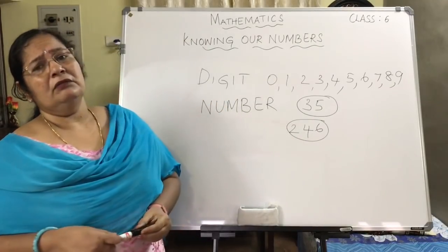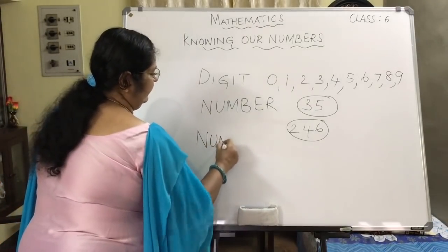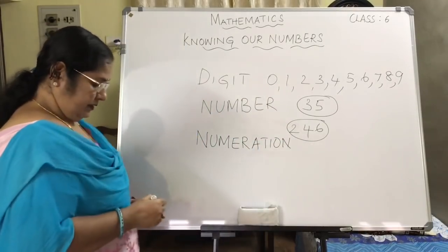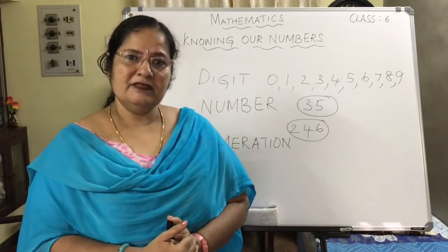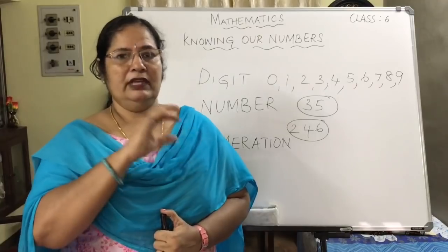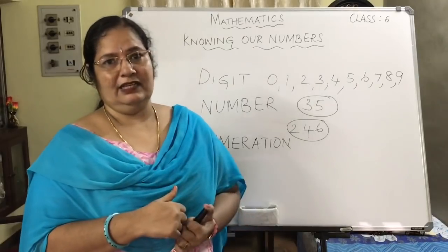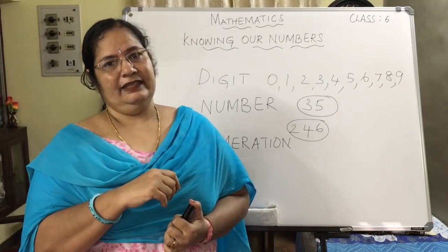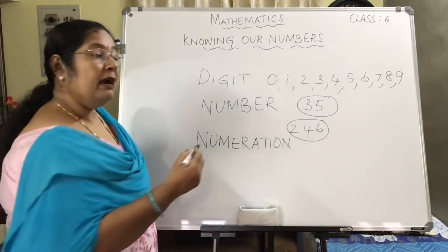Now another term we come across is numeration. See, all of us have got our own names — why do we have names? It is for identifying us. All of you have ID cards and your names are printed on them. Same way, numbers have also got their own identity. We call them by their names, and that is known as a number name.